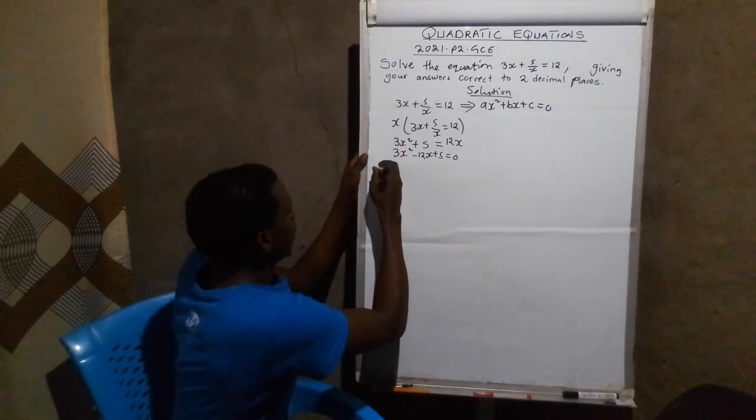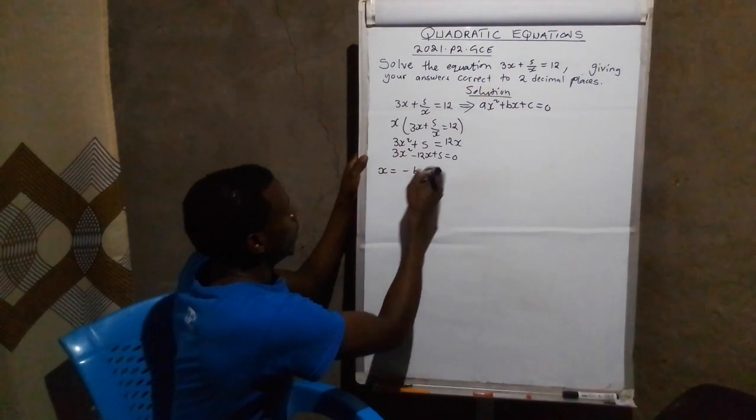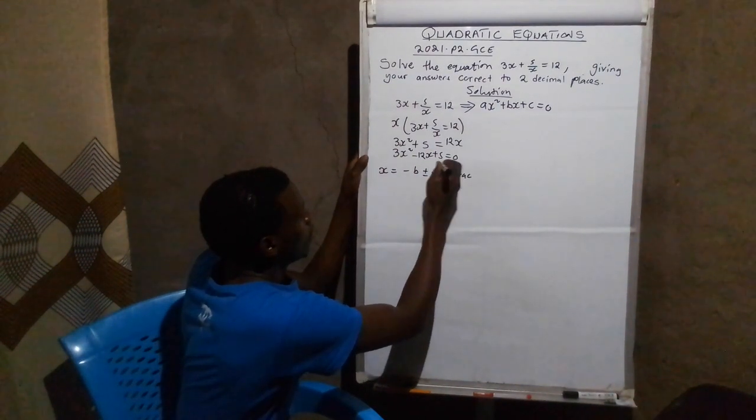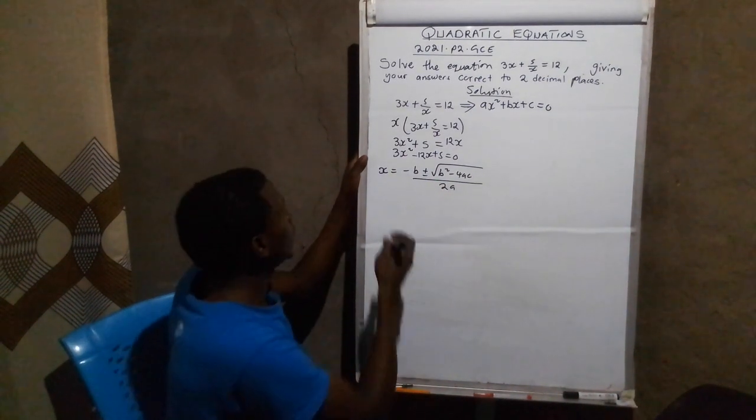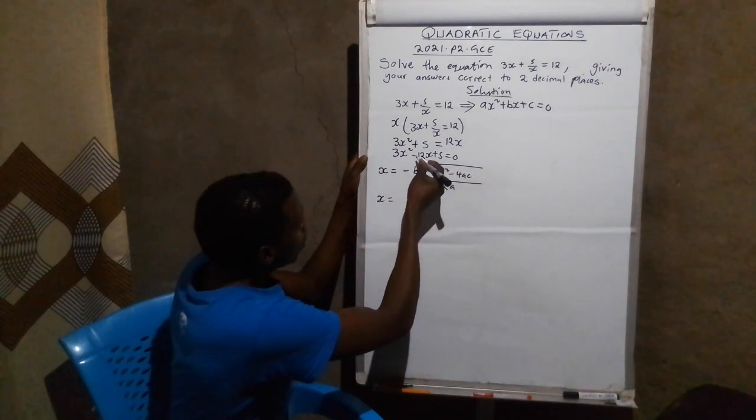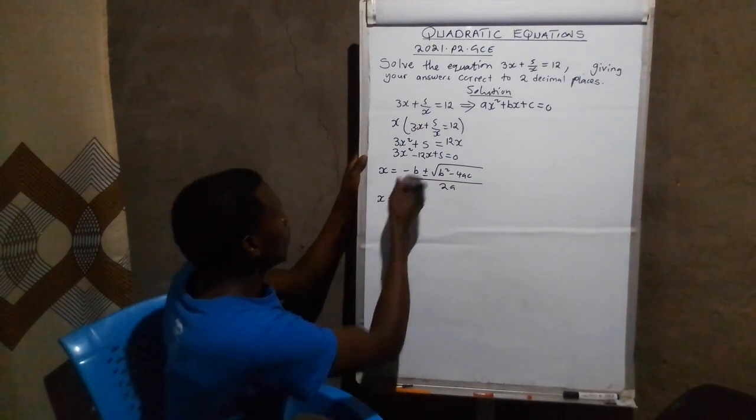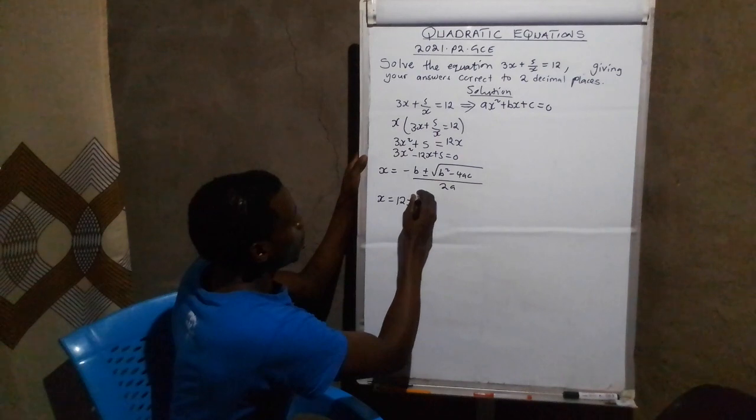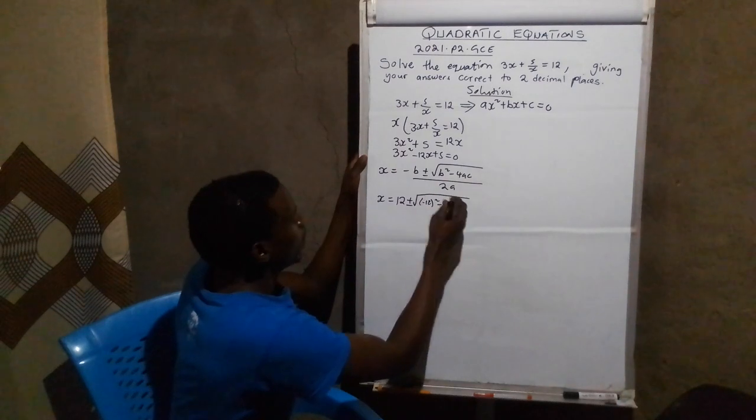From there, you can copy the quadratic formula, which is x equals to negative b plus or minus square root of b squared minus 4ac, everything over 2a. This is x equals to negative b. Our b is negative 12. On the formula, we have negative. So negative and negative will cancel each other and we are going to have positive 12. Then we have plus or minus square root of b squared, which is negative 12 squared, minus 4 times a, which is 3, times c, which is 5.